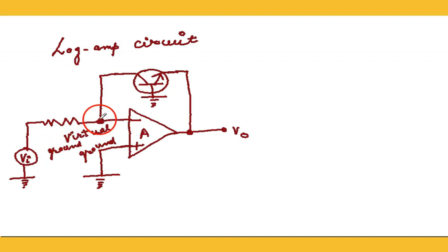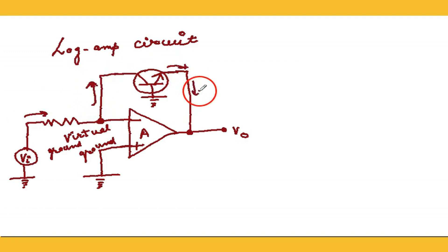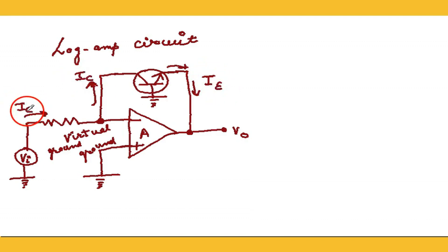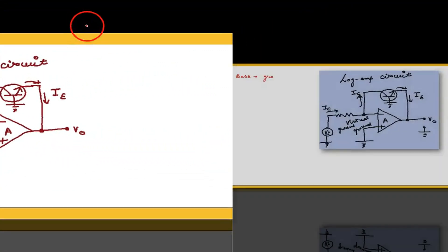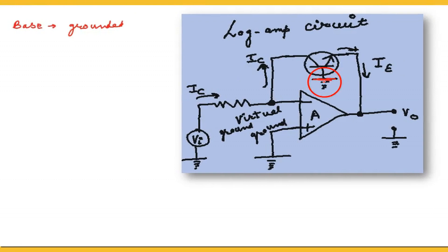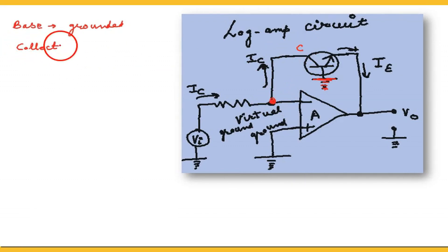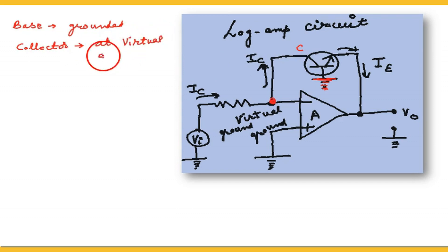Because the positive terminal is at ground voltage, this creates a virtual ground. The collector current will pass and there will be an emitter current. The emitter current is approximately equal to the collector current — collector current and emitter current are approximately equal. The base of the transistor is grounded and the collector is at virtual ground voltage.